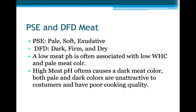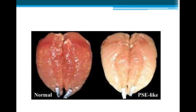PSE stands for pale, soft, and exudative. DFD stands for dark, firm, and dry. A low meat pH is often associated with low water holding capacity, which results in pale meat color. High meat pH often causes a dark meat color. Both pale and dark colors are unattractive to consumers and have poor cooking quality. This is what normal meat looks like, and this is what pale, soft, and exudative meat looks like.